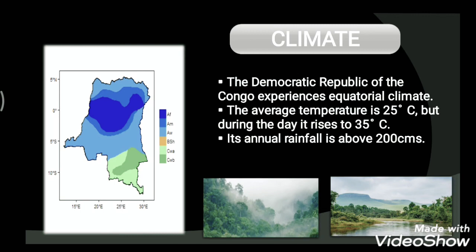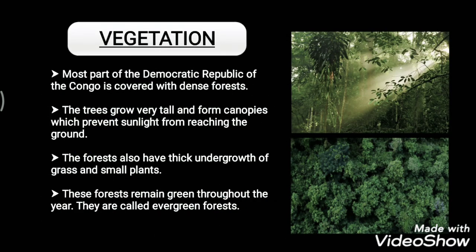Its annual rainfall is above 200 centimeters, and there is no cold type of climate. Most of the Democratic Republic of the Congo is covered with dense forests because of heavy rainfall and abundant sunlight. The trees grow very tall and form canopies which prevent sunlight from reaching the ground.